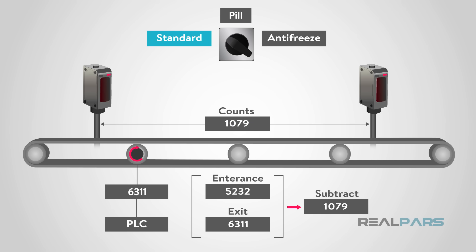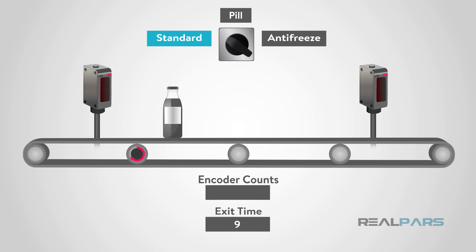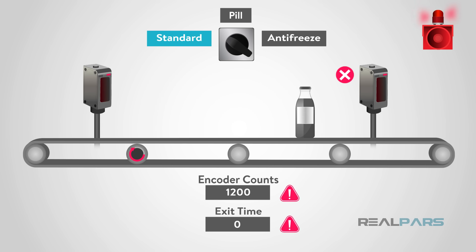That doesn't tell us that the object is 3 inches from the exit or just entering, etc. We just know that the object will enter, a count will be captured, and the object will exit, and again, the count captured. In the event that we did not see the object exiting within the allowable travel count, plus or minus a deadband, the machine will fault and the process will stop.